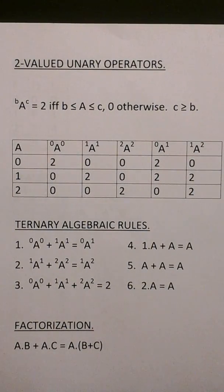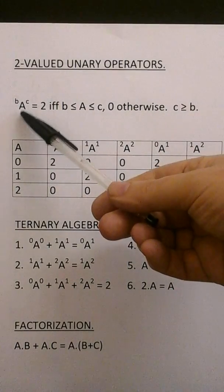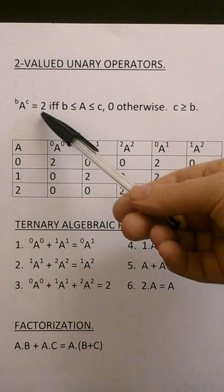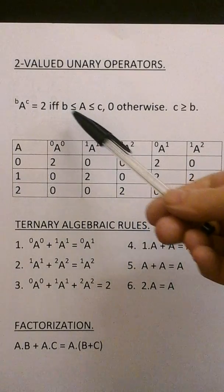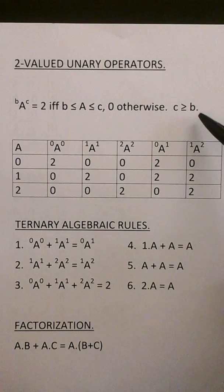Here we have the two valued unary operators. So A, B, C equals 2 if and only if A is greater or equal to B and equal to B and less than equal to C, 0 otherwise C greater or equal to B.